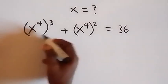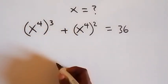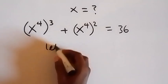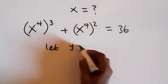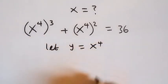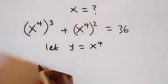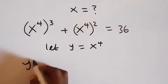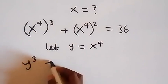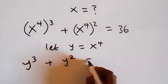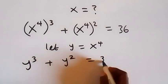Then here we have x raised to power 4 common. So let's represent that — let y be equals to x raised to power 4. Then we can write this again now in terms of y.